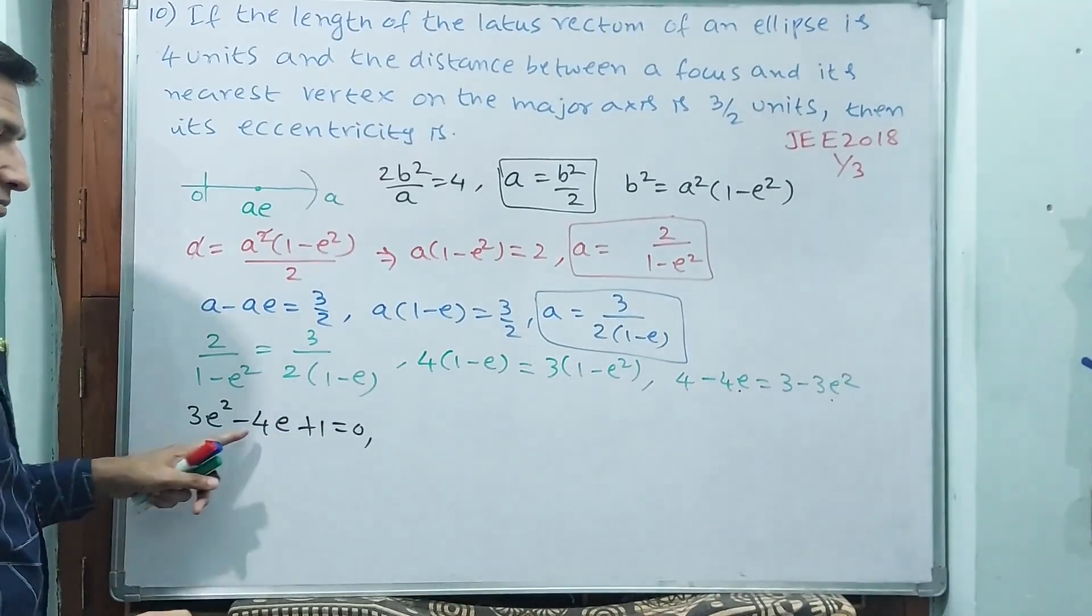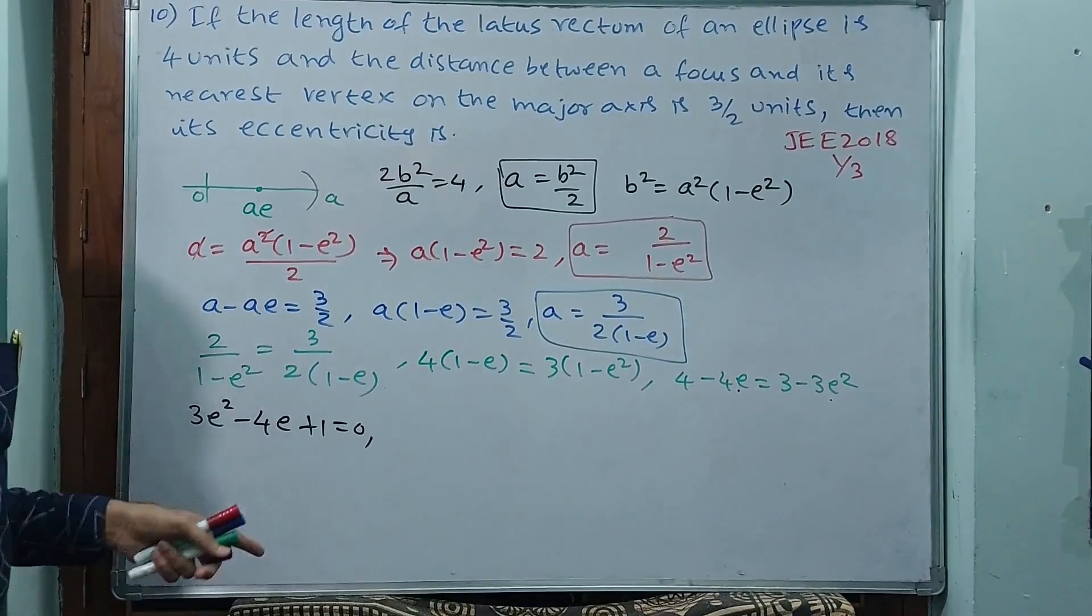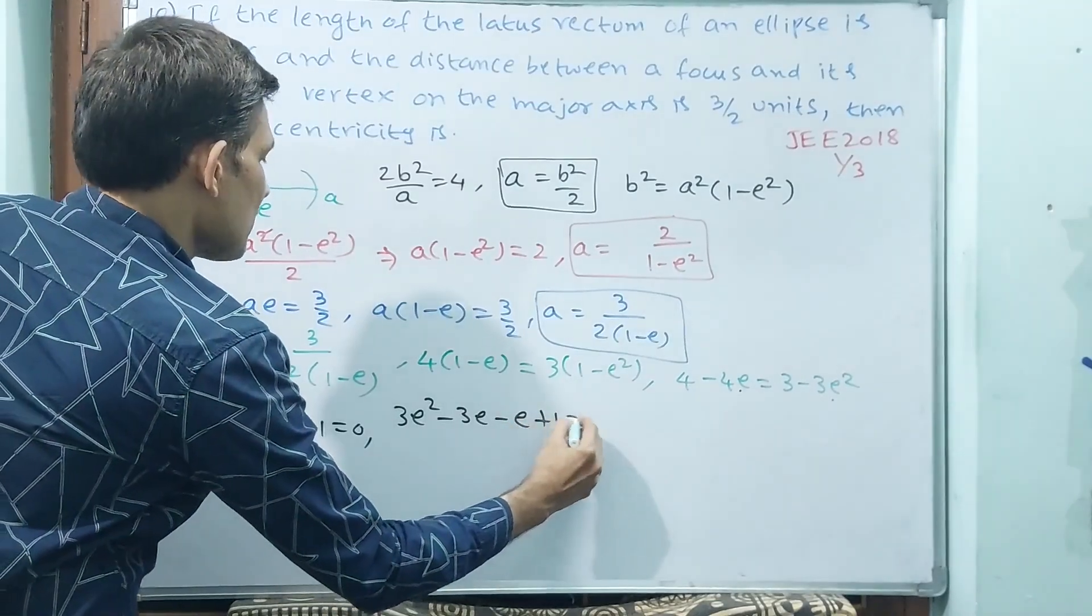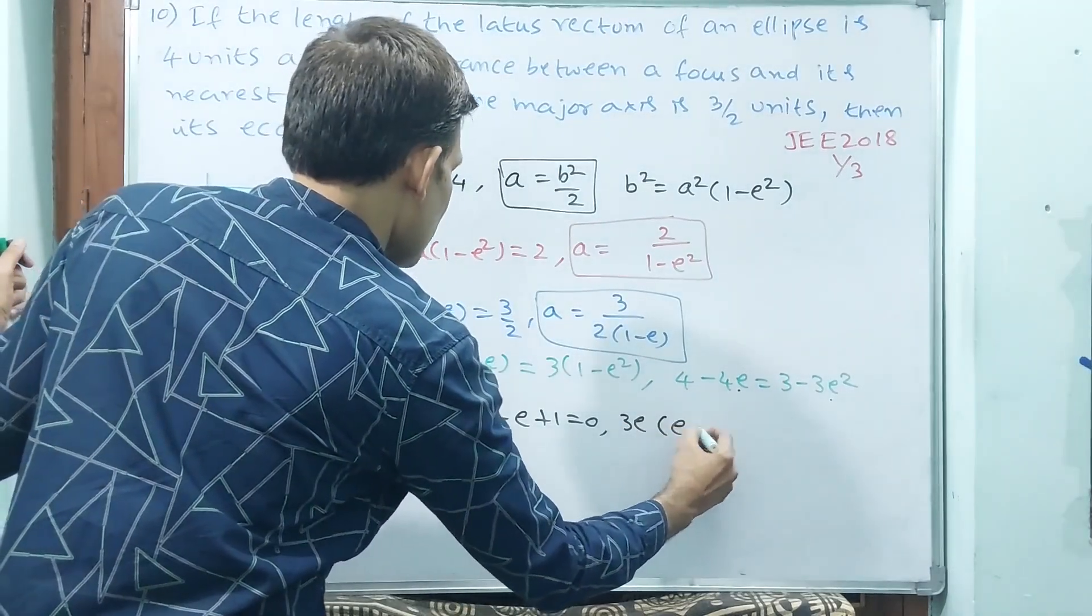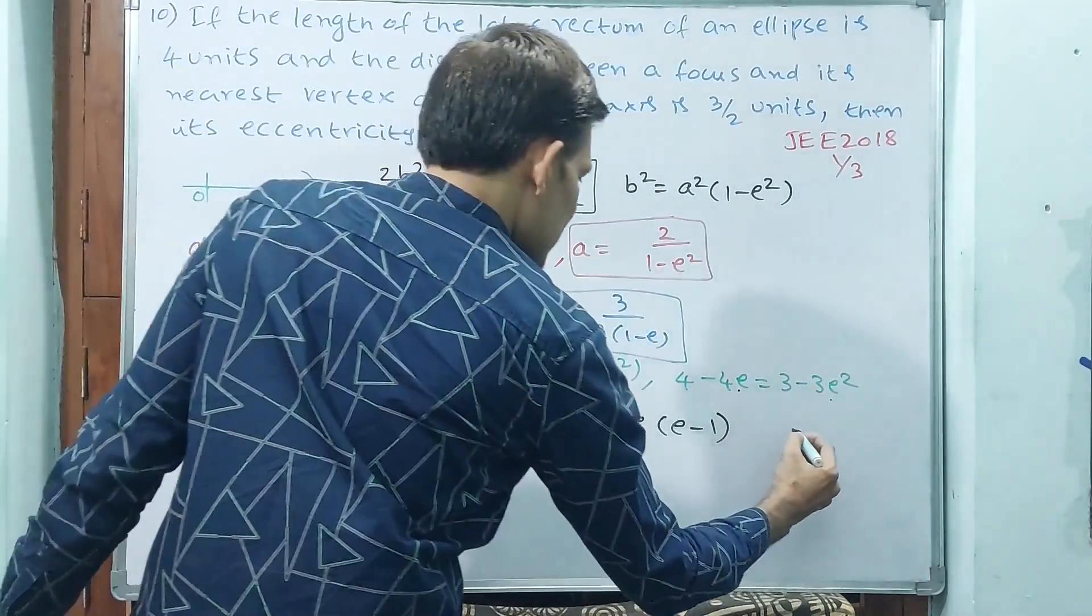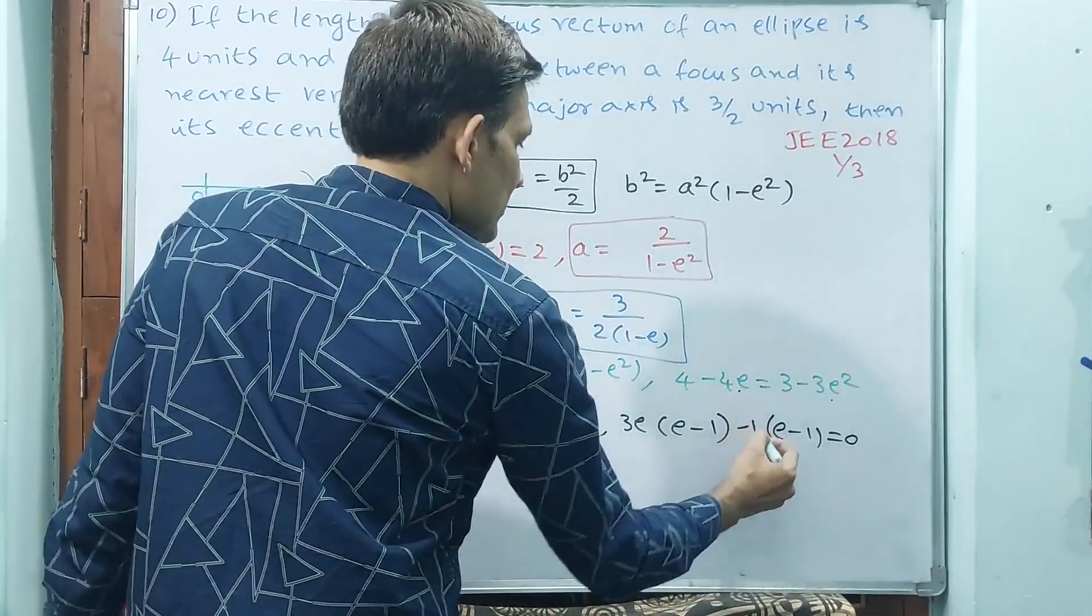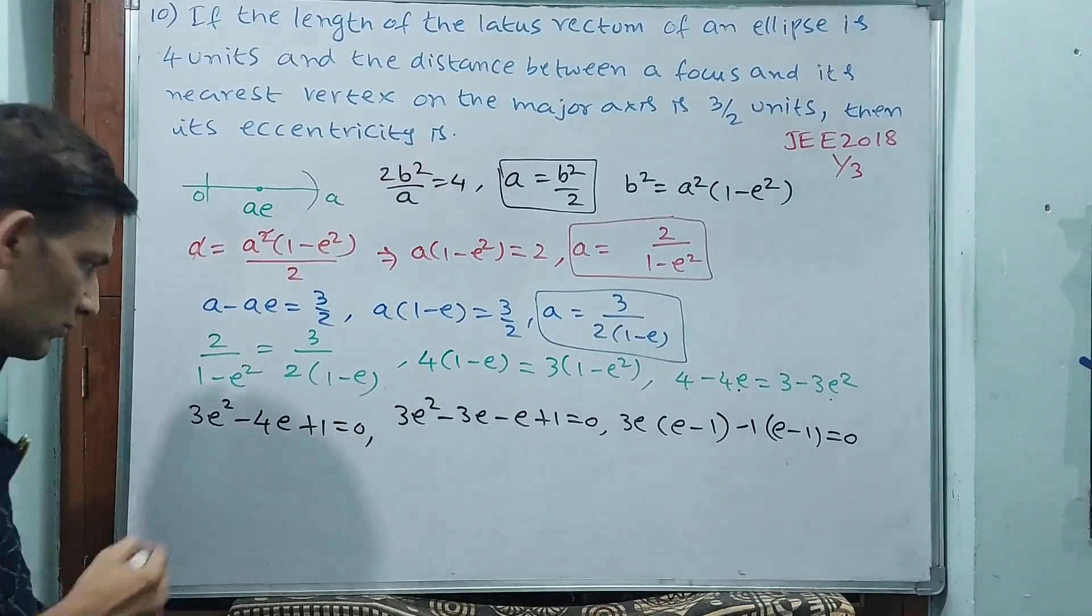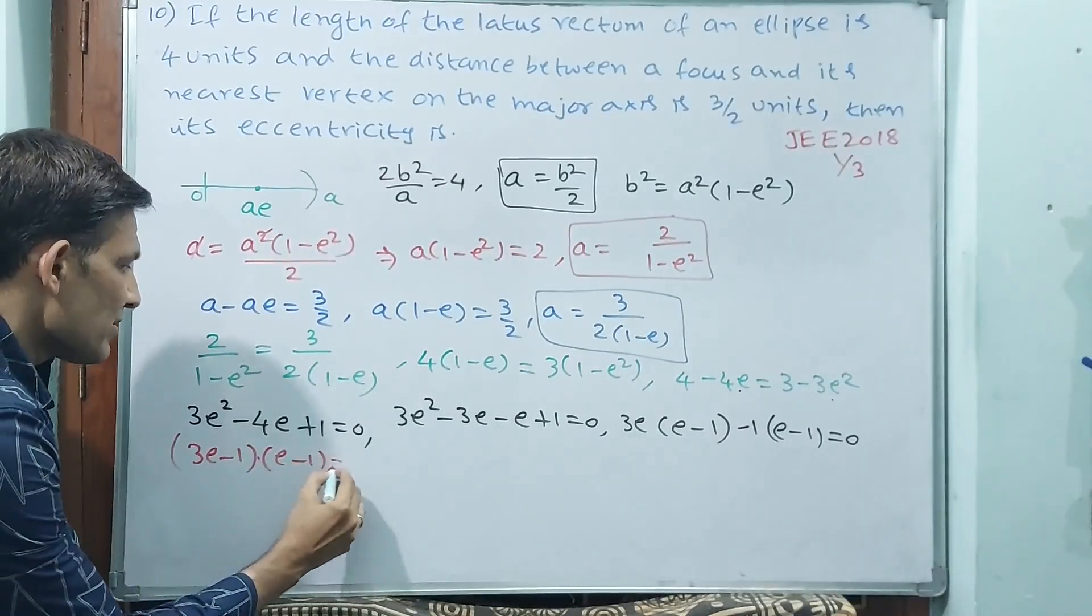3 into 1, 3 has to come, and minus 4 has to come. Minus 3 into minus 1 is plus 3. Minus 3 plus minus 1 is minus 4. Right. That means 3e square minus 3e minus e plus 1 equal to 0. Okay, minus 4e. Then 3e is to take common, e minus 1. 3e square minus 3e. Again e minus 1 we have to take as common. Minus is there. Minus 1 times minus e plus 1. Okay, now write down. That means 3e minus 1 into e minus 1 equal to 0.